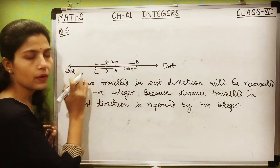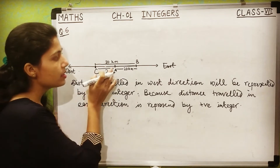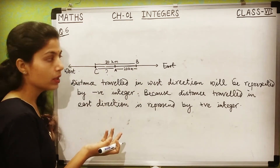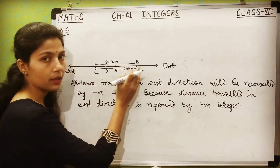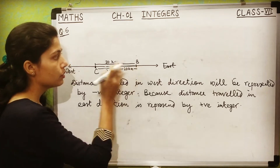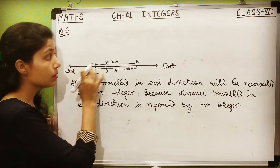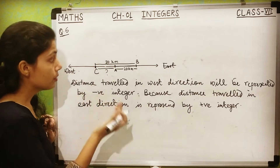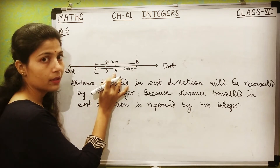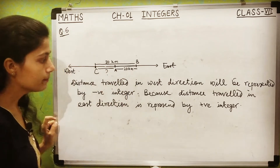Since the east direction distance is positive, from A to B is plus 20. And from B to C is in the negative direction, so it will be minus 30 km. So the distance from point A is 20 minus 30, which will be minus 10.